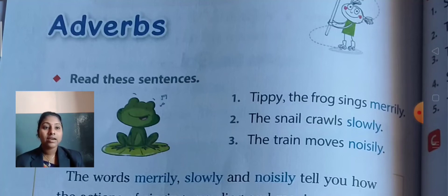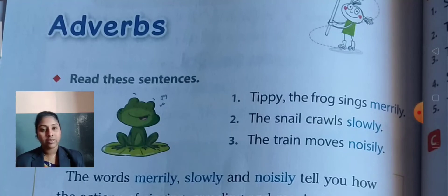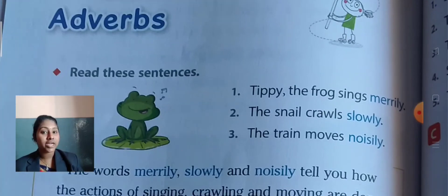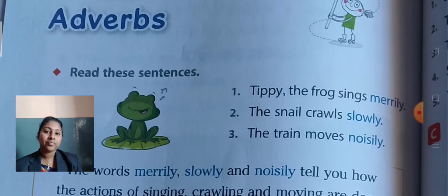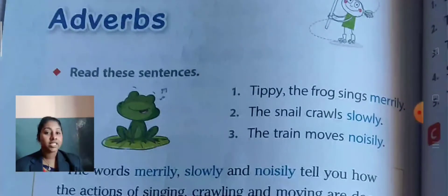Second sentence: The snail crawls slowly. Snails are very small — they cannot move fast, they crawl slowly. Third sentence: The train moves noisily — the train moves making sound.